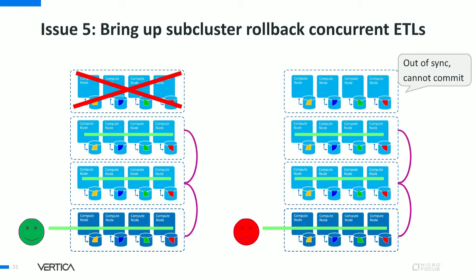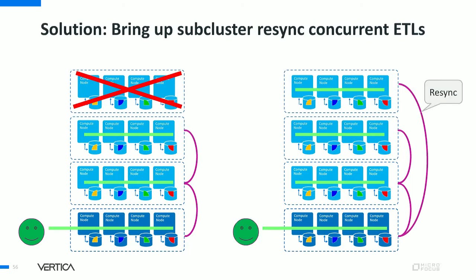With secondary subclusters, users can start and stop as needed, which raises another issue: if an ETL transaction is running and in the middle a subcluster starts up, in older versions there was no catalog resync mechanism to keep the new subcluster up to date, so Vertica would roll back the ETL session to keep data consistency. This is quite disruptive because real-world ETL workloads can sometimes take hours, and rolling back at the end wastes resources. We resolved this in version 9.3.1 by introducing a catalog resync mechanism — ETL transactions no longer roll back but instead take some time to resync the catalog and commit.